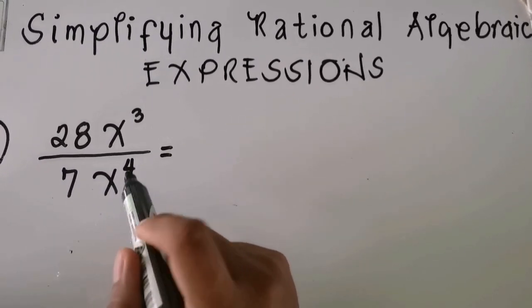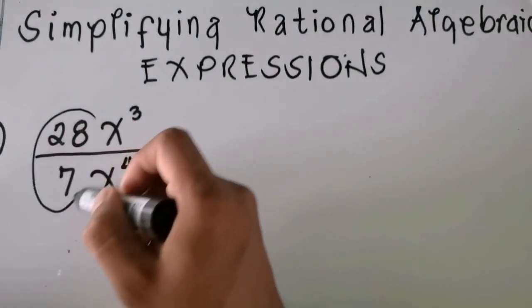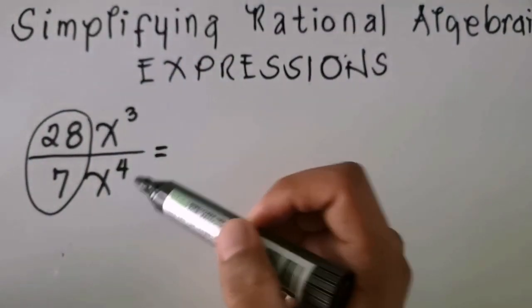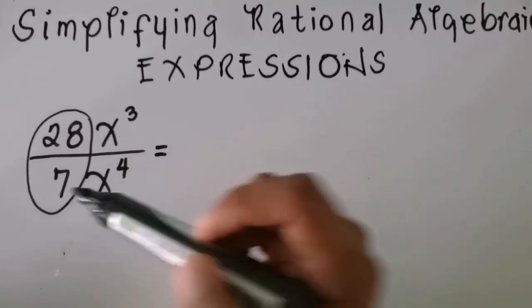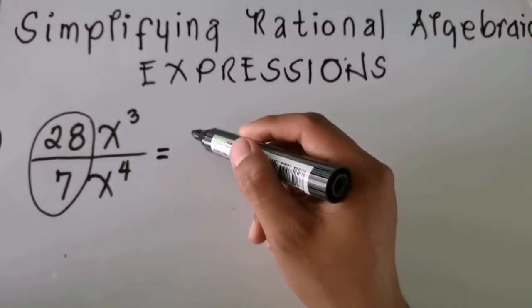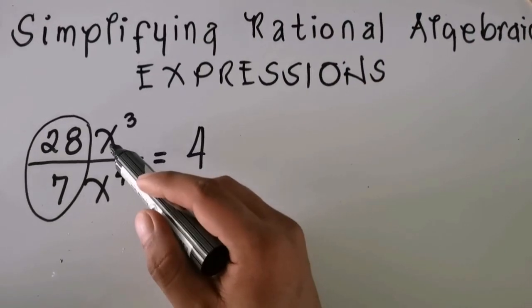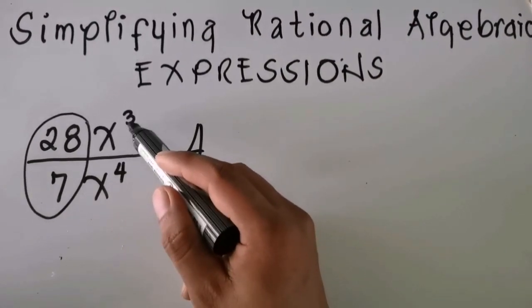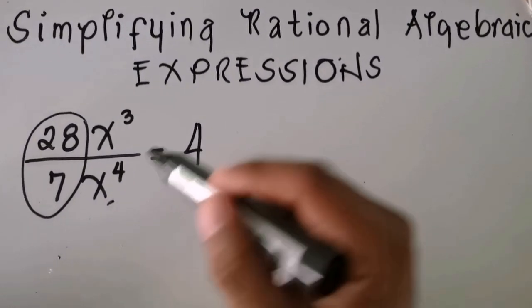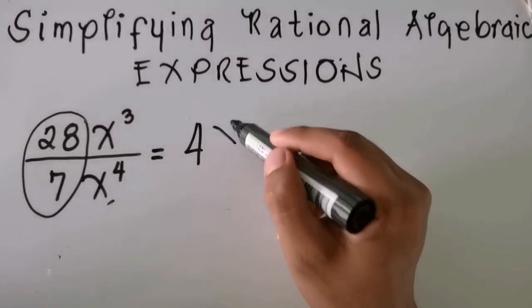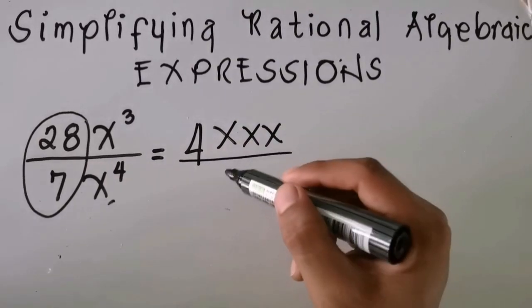We are going to simplify this one. First, you need to divide 28 and 7. What is 28 divided by 7? That is 4. So we have 4 in the numerator, x cubed in the numerator, and x to the fourth power in the denominator.